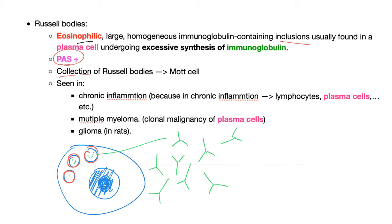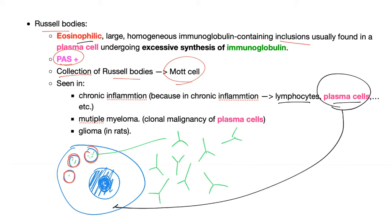A PAS-positive collection of Russell bodies is called a Mott cell. When can you see Russell bodies? In chronic inflammation. Why? Because in chronic inflammation you have lymphocytes, plasma cells, Langerhans cells, etc. — not neutrophils, that's acute inflammation. In chronic inflammation you see plasma cells, and inside those plasma cells you see Russell bodies.